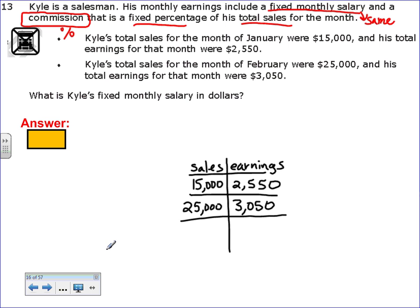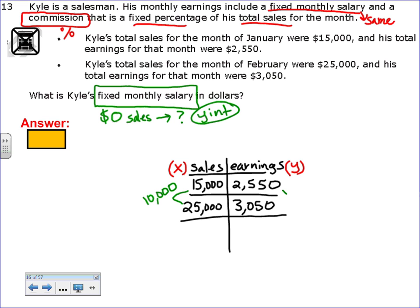The question says, what is his fixed monthly salary? Not the percent, not the money off commission, the fixed monthly salary. If he sells $0 of sales, how much money is he going to make? That's what they're asking. They're asking for the y-intercept. So I need to work backwards until my sales, which represent my x, is 0.